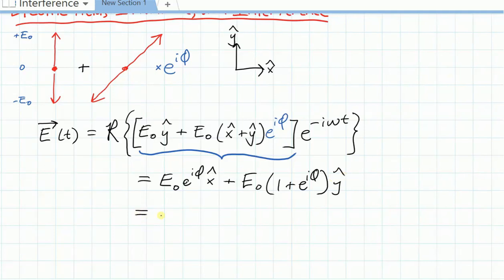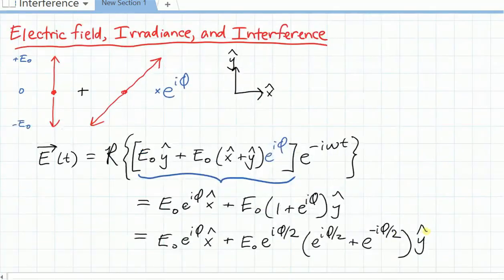If I write this out a little more explicitly, I've still got e-naught e to the i phi x-hat. But this term, I'm going to do a particular manipulation. I'll keep the e-naught over here. I'm going to factor out an e to the i phi over 2. That becomes e to the i phi over 2 times e to the minus i phi over 2, y-hat.